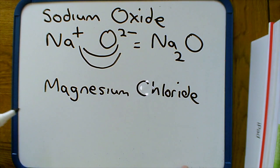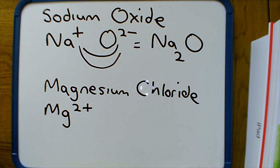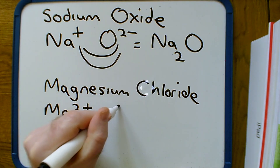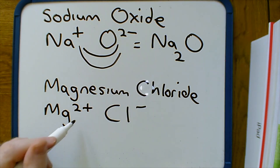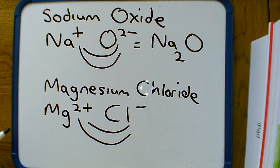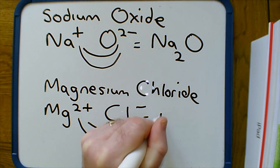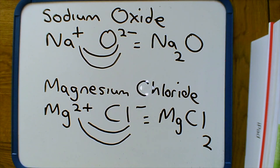For magnesium chloride: the charge for magnesium is Mg2+ and the chloride ion is Cl− with a 1− charge. How many minuses do I need to cancel the 2+? Two. So the formula is MgCl2. Alternatively, just swap the numbers over — swap the 2 and the 1 — giving Mg1Cl2. We don't write the 1, so the formula is MgCl2.